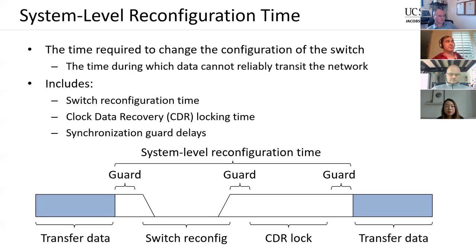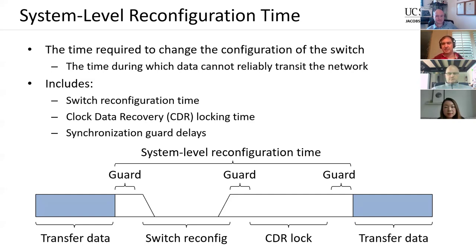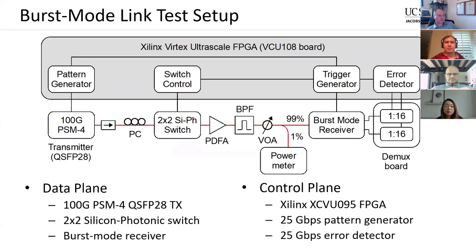The main thing we were examining was what we call the system-level reconfiguration time — how long it takes to change not just the switch configuration but the entire network: the switching time, plus the CDR locking time, plus all required guard bands and delays for the entire system to operate. These guard delays can come from time synchronization required to get all pieces of the network operating on the same time scale.